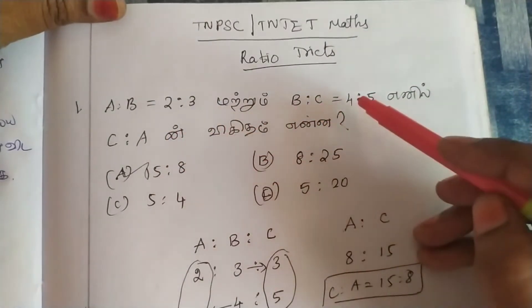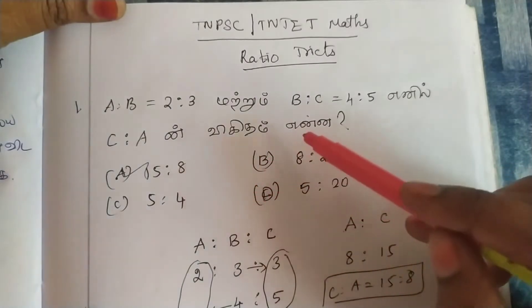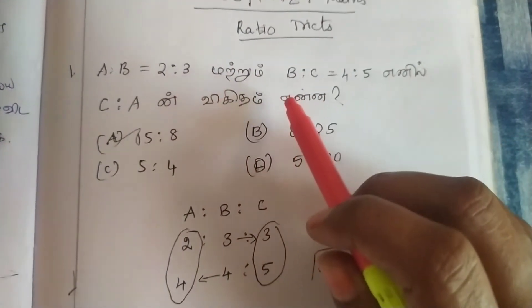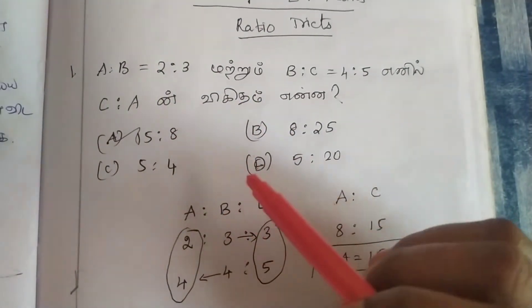A is to B, 2 is to 3, and B is to C, 4 is to 5, and C is to A. How do you do this?